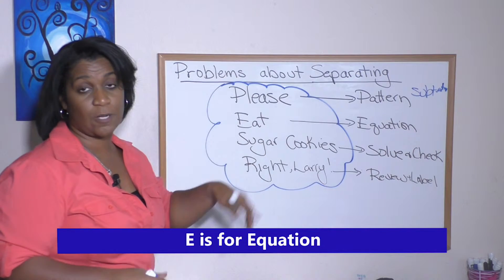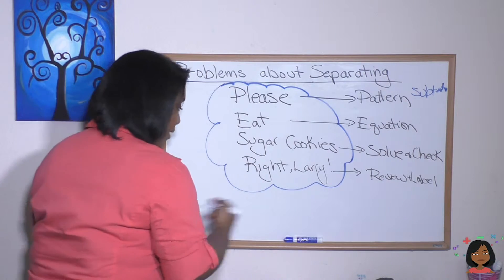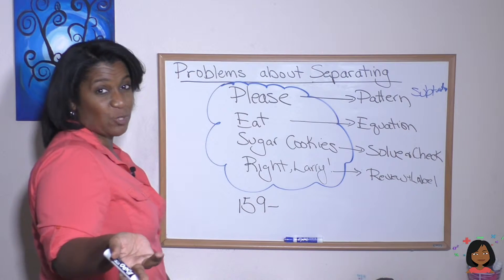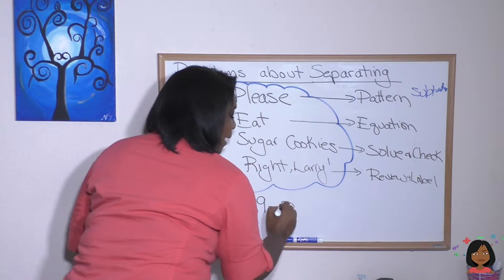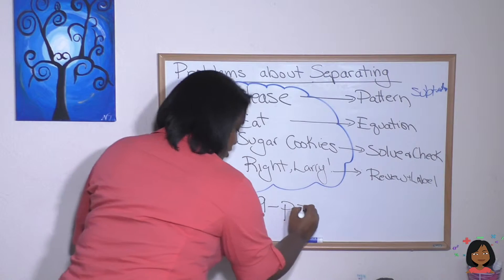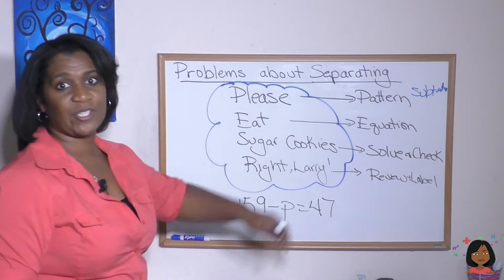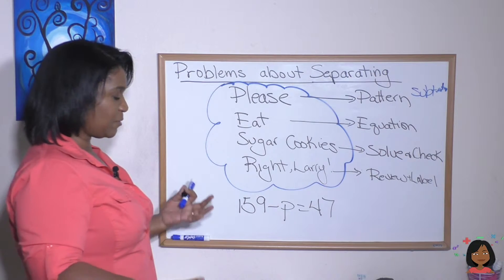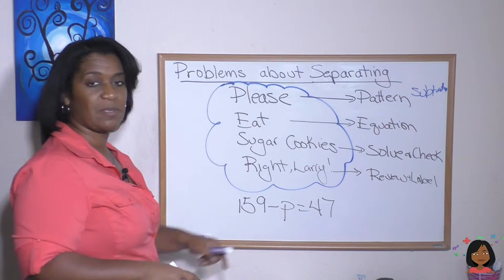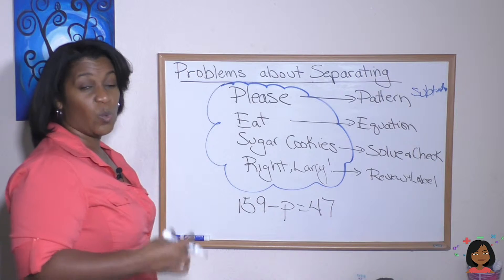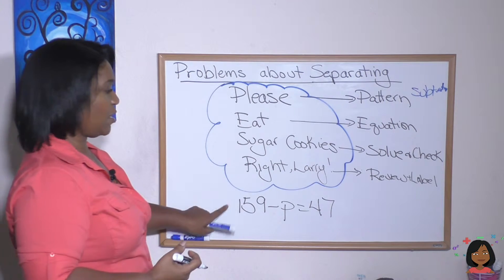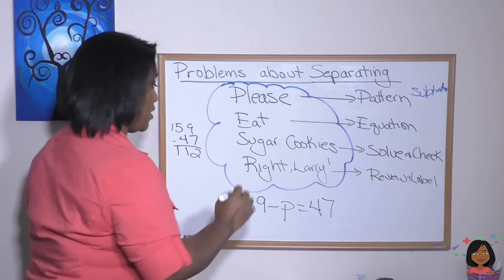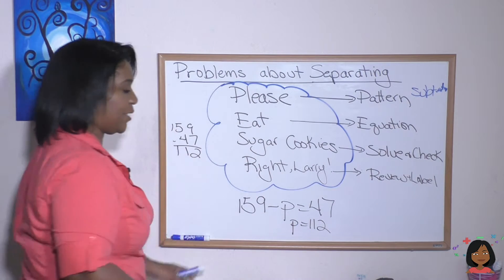E stands for equation. What's the equation? Our beginning amount was 159 pieces of popcorn. We ate some — we don't know how much, so there's a question mark. We're going to call that P for popcorn. Then we have 47 as our total remaining. That is our equation. Now we move on to sugar cookies — solve and check. 159 minus P: a missing subtrahend means we subtract to find the answer. 159 minus 47 equals 112. So P is 112.